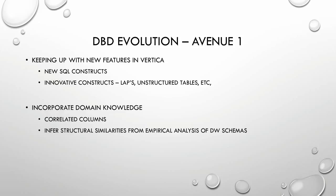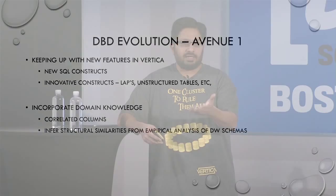The DBD has evolved over the past few years in two main categories. Avenue one involves constant development: supporting new SQL constructs as the execution team builds new join operators, supporting new kinds of SQL queries the optimizer handles, and handling completely new features released in Vertica - such as live aggregate projections (similar to materialized views) and unstructured tables - to judiciously create these based on analysis of query workloads.